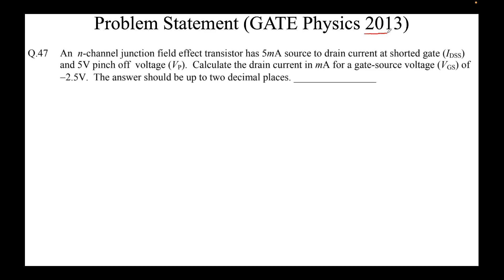The problem statement from GATE Physics 2013 reads as follows. An N-channel junction field effect transistor has 5 milliamps source to drain current at shorted gate, also known as IDSS, and 5 volts pinch-off voltage VP. Calculate the drain current in milliamps for a gate-source voltage VGS of minus 2.5 volts. The answer should be up to two decimal places.